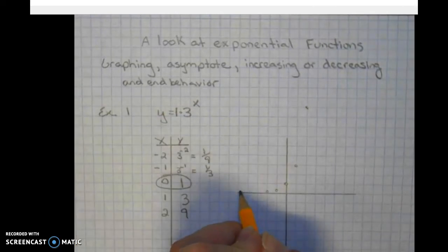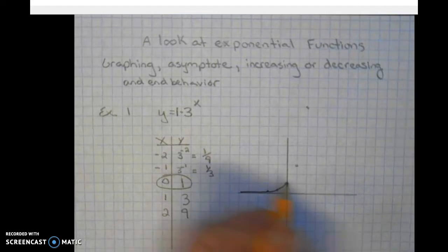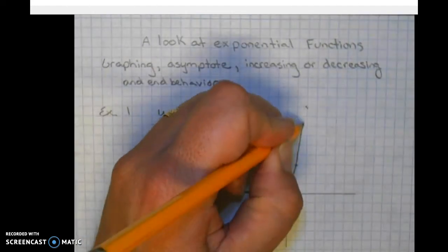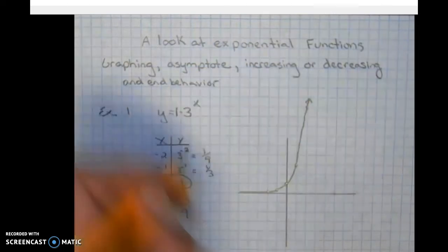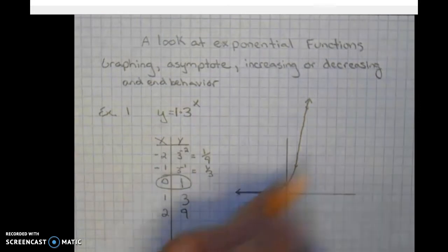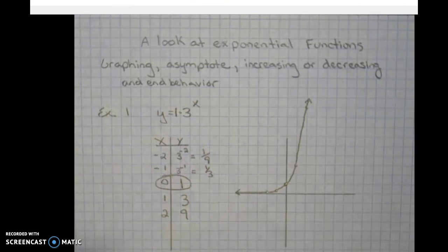So we're going to go along here along the x-axis and then it's going to curve up dramatically through those points. Always put arrows on the ends because since this is a function and equation, it's going to continue on infinitely in both directions, left and right.